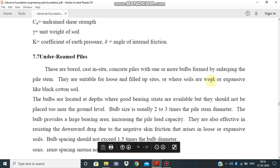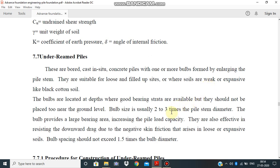Next is under-reamed piles. What is under-reamed pile? Actually, it is a pile having bulbs in between the length of the pile. These bulbs kind of provide extra resistance against the settlement, and mostly it is used in expansive soils and soft soils.